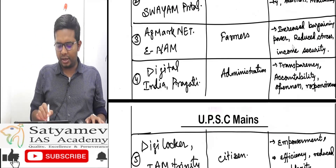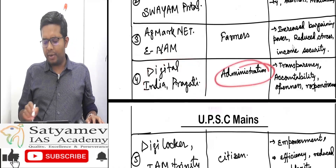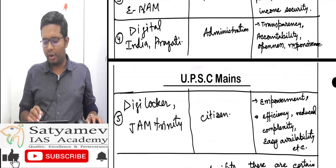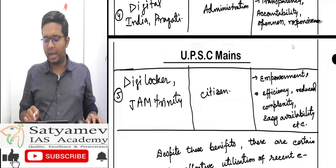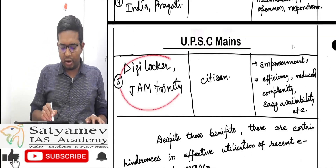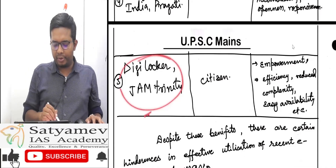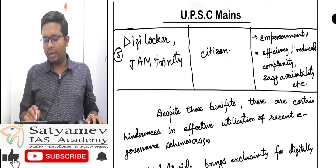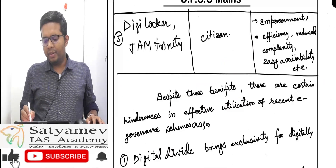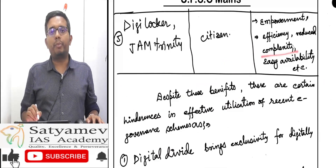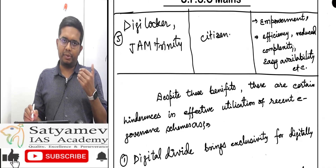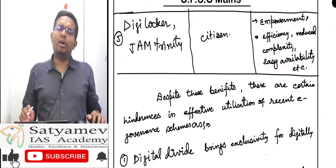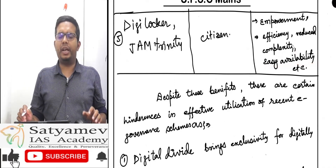Digital India and the PRAGATI scheme in administration bring transparency, accountability, openness, and responsiveness. Digital Locker and the JAM Trinity for citizens will empower them, bring efficiency, reduce complexity — meaning it will bring simplicity — and also make data easily available for the citizen.